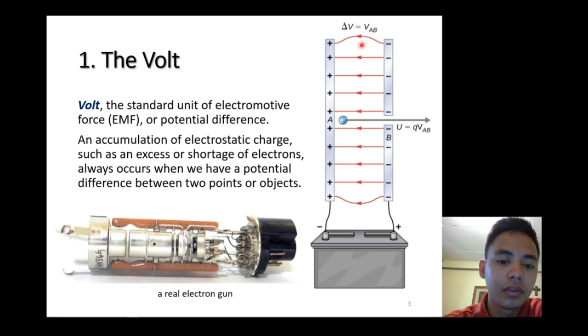This is an example of an electron gun. When electrons are gained to a device, this is actually the idea of the cathode ray.